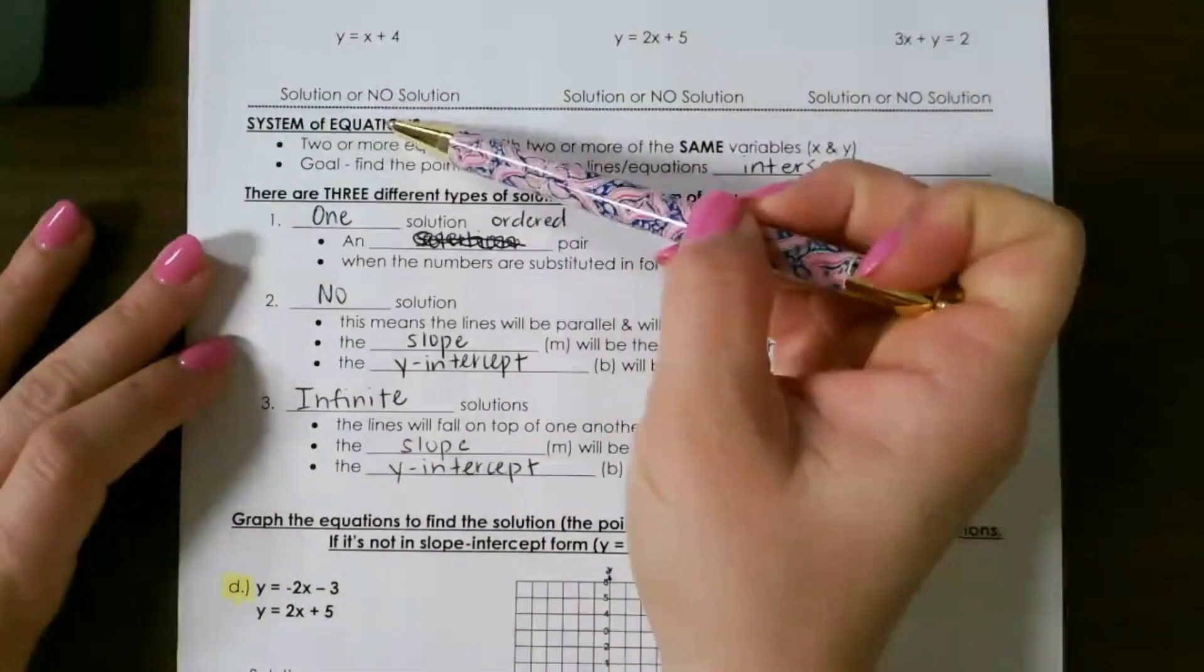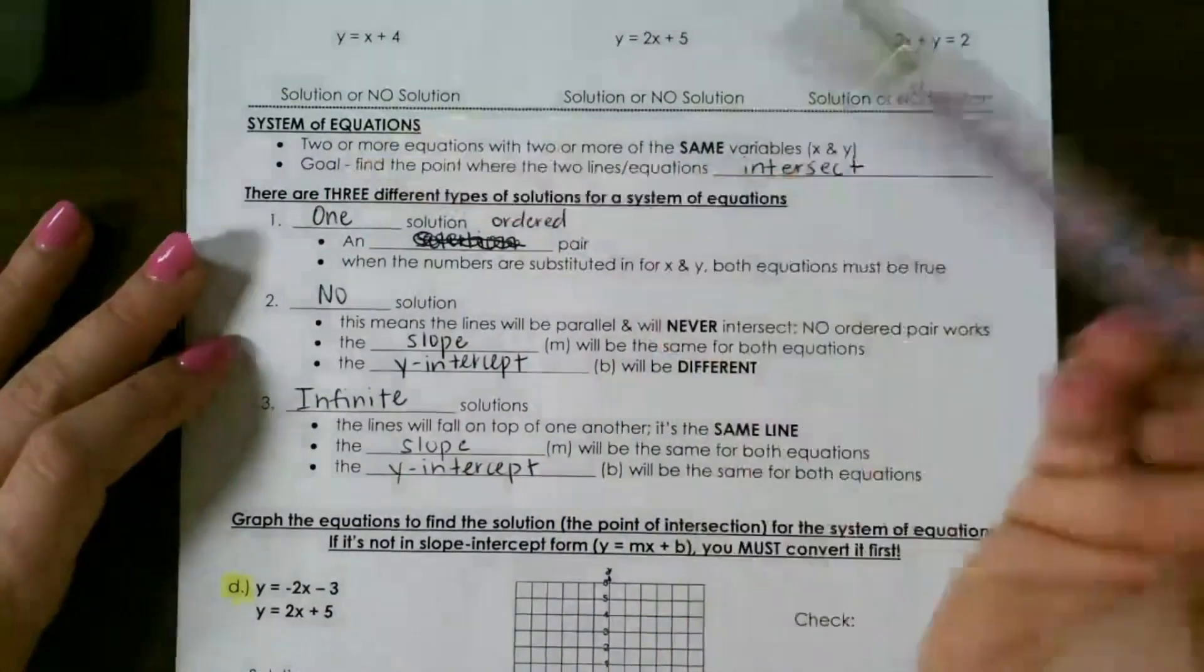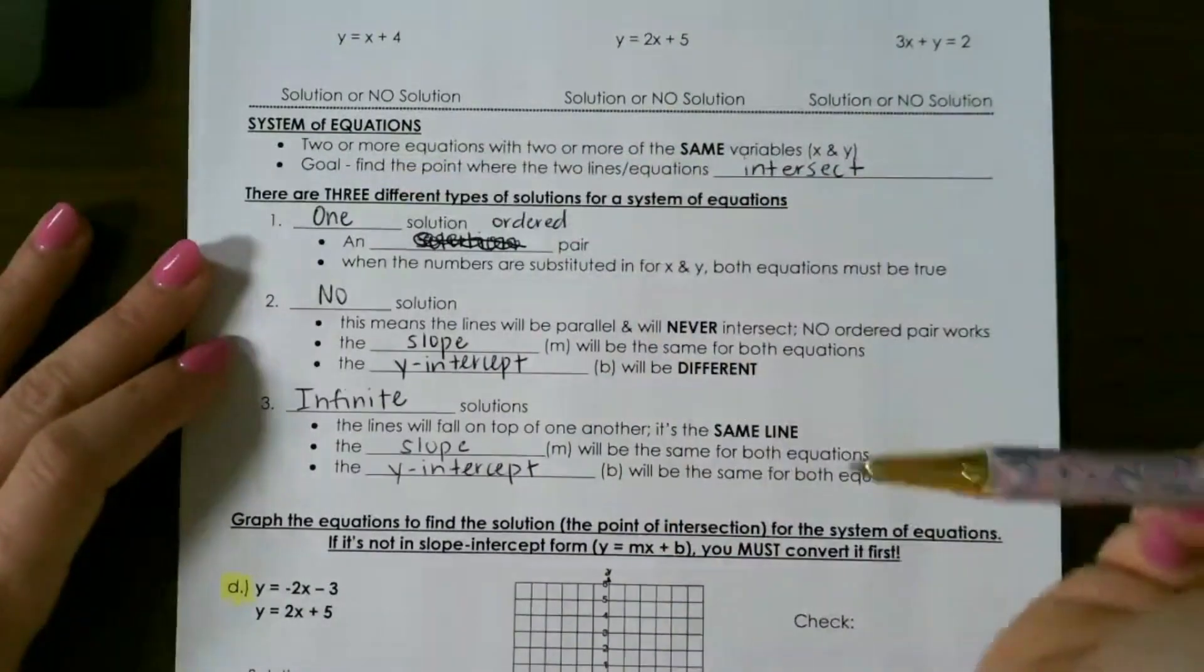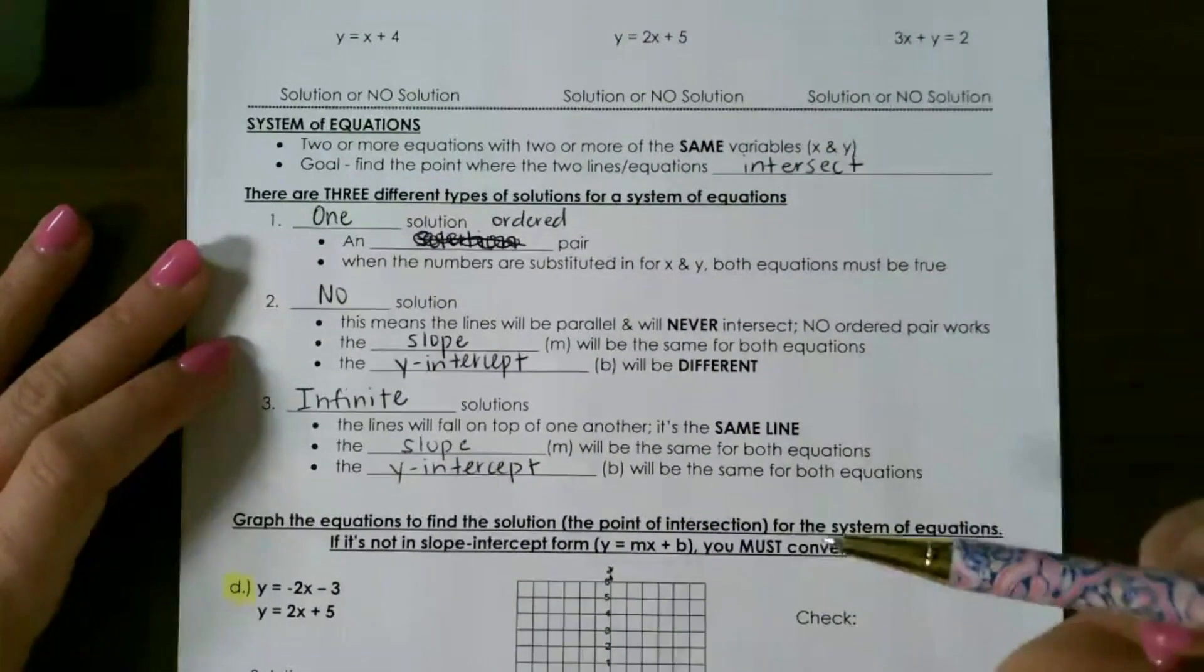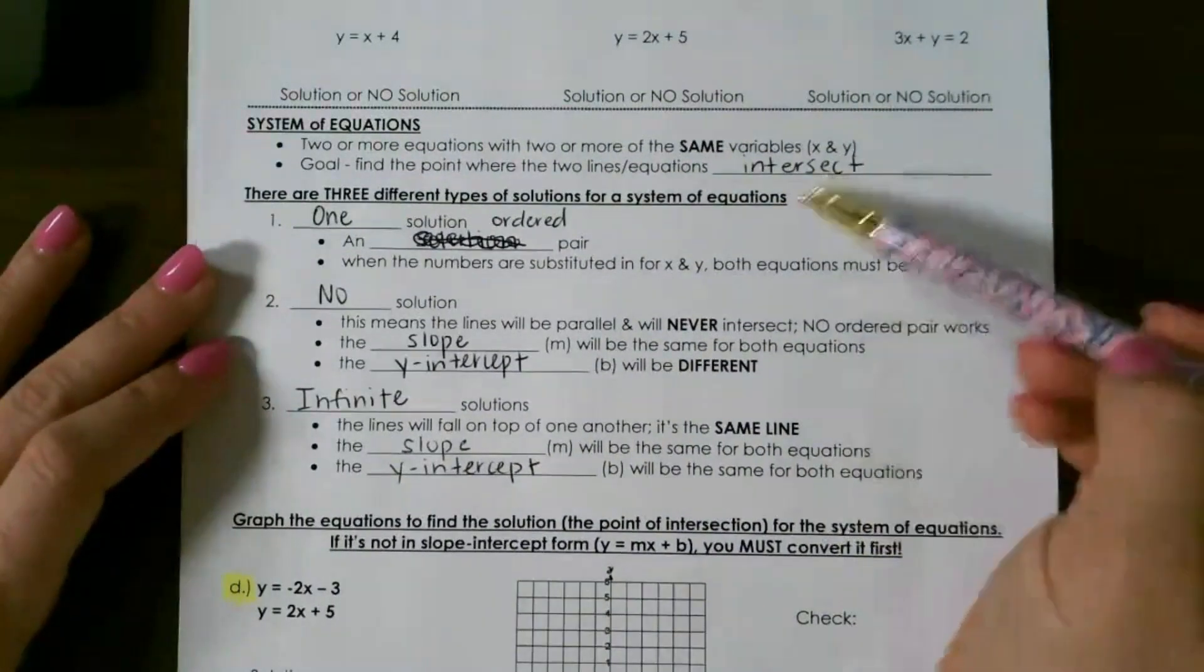Let's take a look at graphing systems of equations. A system of equations is two or more equations with two or more of the same variables, x and y. The goal is to find the point where the two lines intersect.